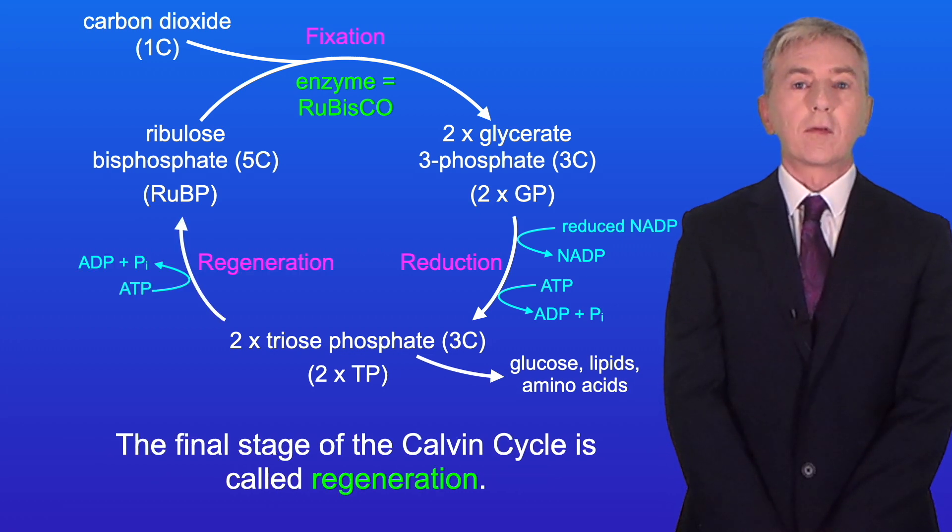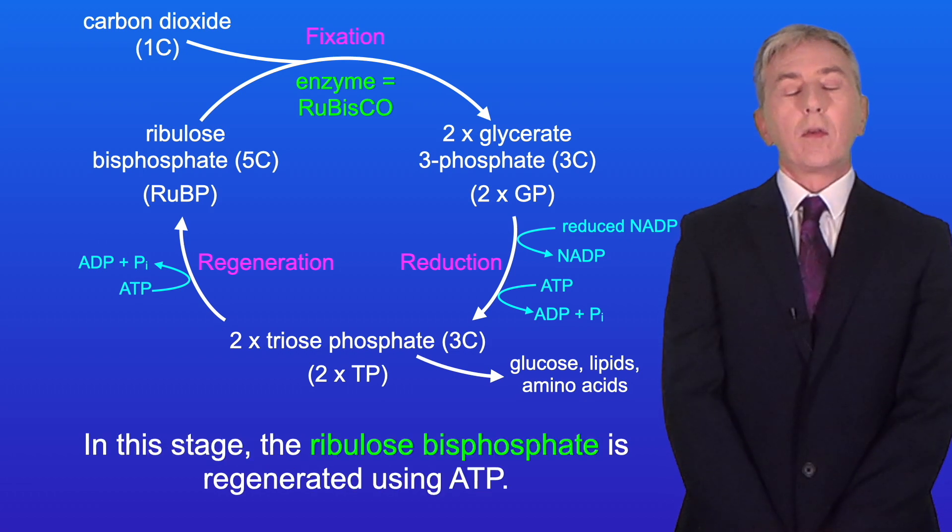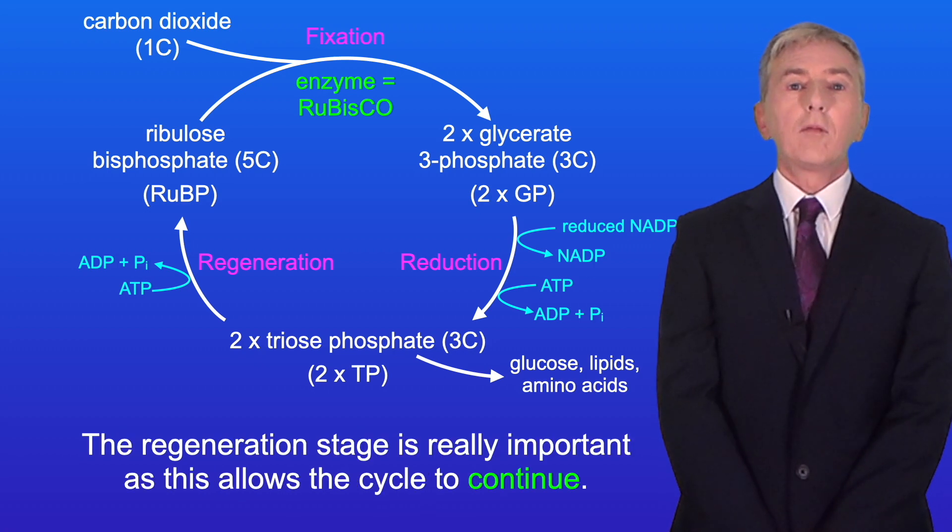The final stage of the Calvin cycle is called regeneration. In this stage, the ribulose bisphosphate is regenerated using ATP. The regeneration stage is really important as this allows the cycle to continue.